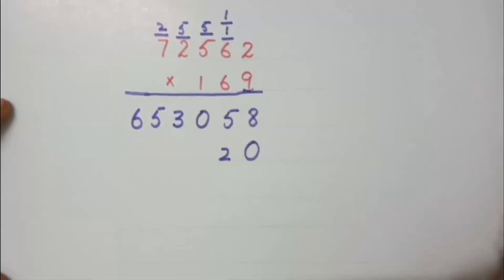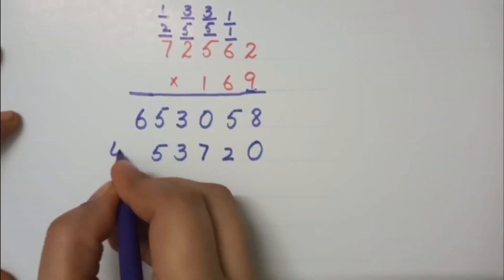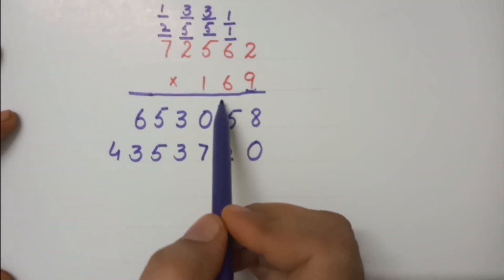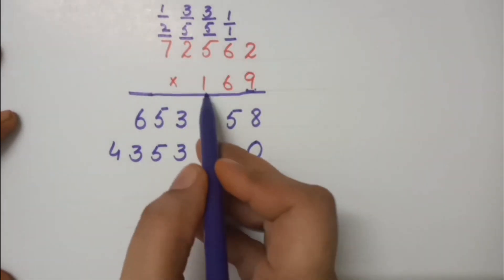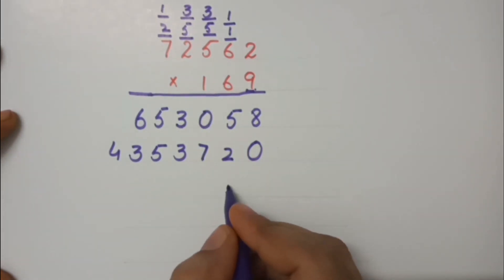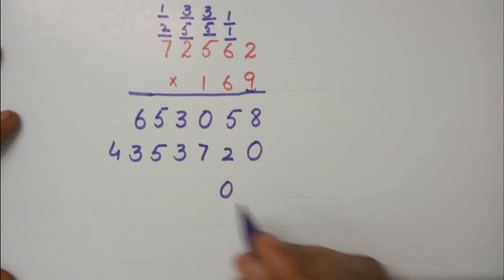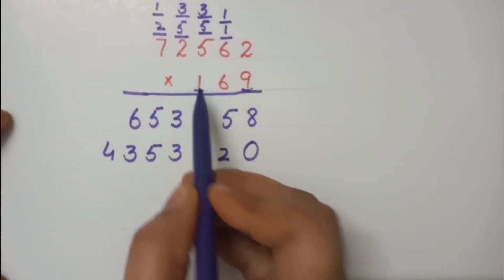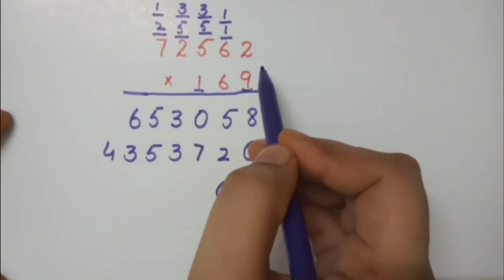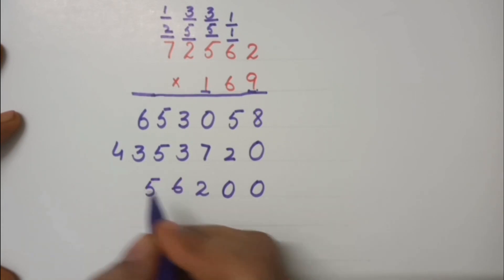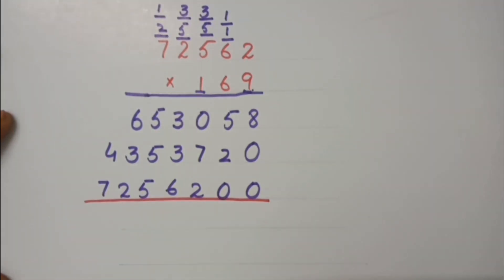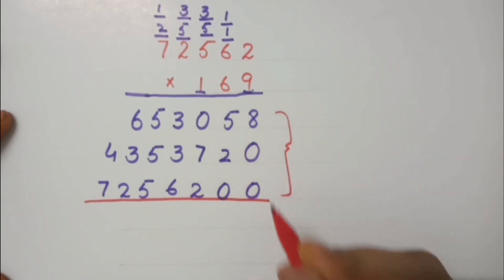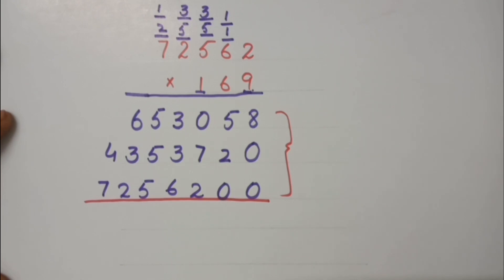We have multiplied all the digits with 6. Now when we move forward towards 1, before that we have to put 2 zeros. Then let's start multiplication with 1 for the whole digit. Now what you have to do is add up all these values. Can you add these by yourself?